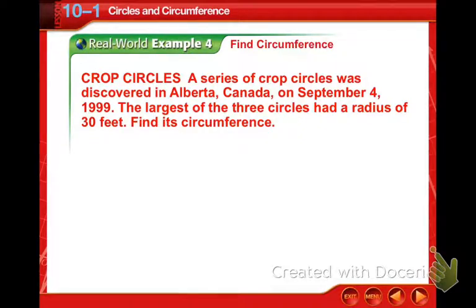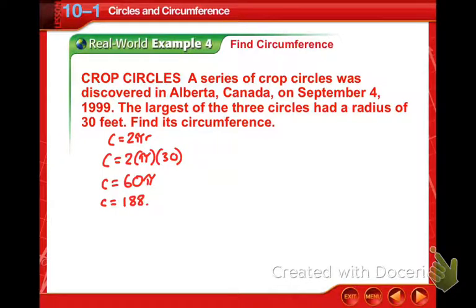So here we have crop circles. A series of crop circles was discovered in Alberta, Canada on September 4, 1999. The largest of the three circles had a radius of 30 feet. We need to find its circumference. So we know again from the formula that circumference is equal to 2 times pi r. So our circumference is 2 times pi and our radius is 30. It doesn't say to round anything specific here. So 2 times 30 is 60 pi. And 60 times pi was out to be, if you round it to the nearest hundredth or nearest tenth, 188.5 feet. And that's our answer.